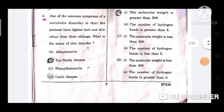Question number 2: One of the common symptoms of a metabolic disorder is that the patients have lighter hair and skin color than their siblings. What is the name of this disorder? The correct option is option B, Tay-Sachs disease.